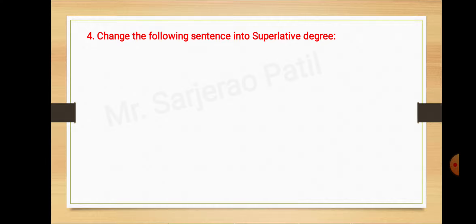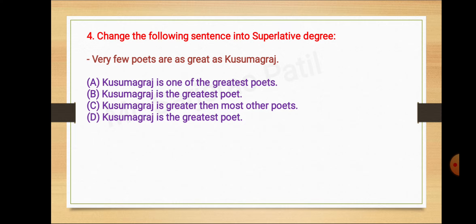Question number 4: Change the following sentence into superlative degree. Very few poets are as great as Kusumagraj. A Kusumagraj is one of the greatest poets, B Kusumagraj is the greatest poet, C Kusumagraj is greater than most other poets, D Kusumagraj is the greatest poet. The correct alternative is A, Kusumagraj is one of the greatest poets.